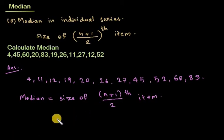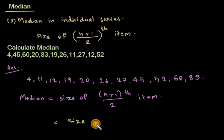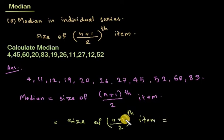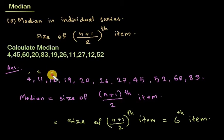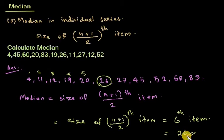Since n = 11, median equals the size of the (11+1)/2th item, which is 12/2 = 6th item. Counting through the arranged values — 1, 2, 3, 4, 5, 6 — the 6th item is 26. Therefore, the median is 26.